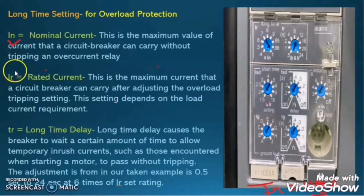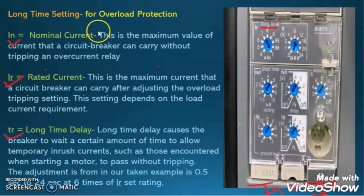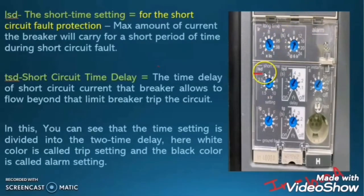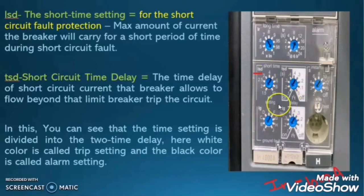I hope you now understand what is nominal current, rated current, long time delay setting, and why these settings are required in the air circuit breaker. Now let us move to the short time setting, ISD. The long time setting provides overload protection. The short time setting is for short circuit protection. Suppose there is a short circuit fault in the load connected by this air circuit breaker — there will be a huge current due to the fault. This short time setting defines how much short circuit current will be allowed and for how much time.